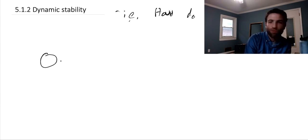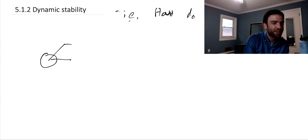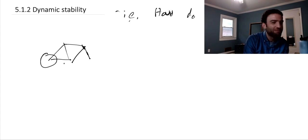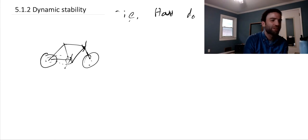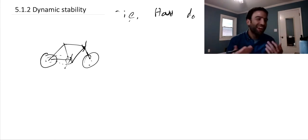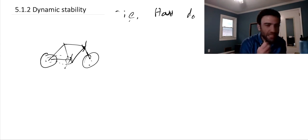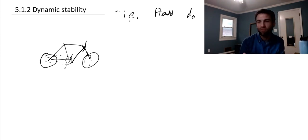How does that help us with bicycles, though? Bicycles - there's a back wheel, a frame, a fork, handlebars, pedals, a gear, a chain going to the back ring, and a front wheel. We've got a bicycle. How does the idea of static stability help us understand why a bicycle is able to stay upright?